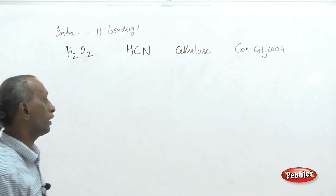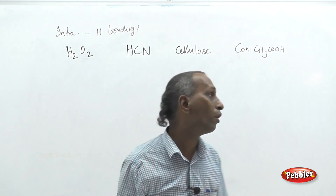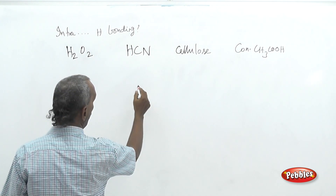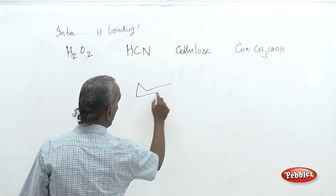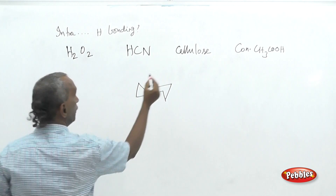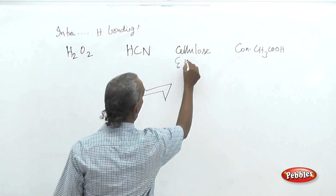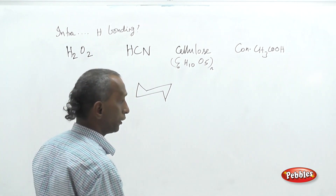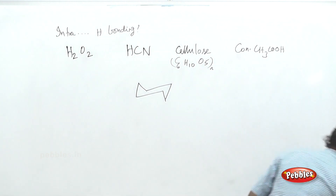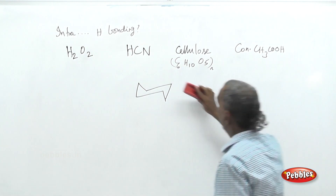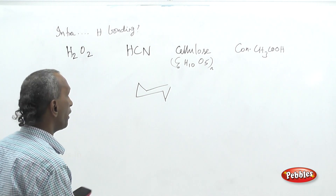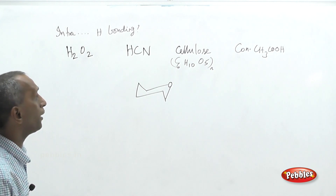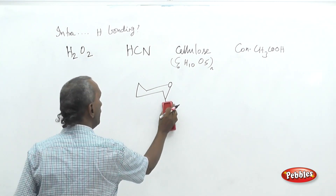Coming to cellulose: cellulose is made up of linkages called glycosidic linkages and is written as a ring structure. Its formula is (C₆H₁₀O₅)ₙ, made up of many glucose units. Cellulose is made up of glucose units connected by glycosidic linkages. In the glucose units arranged as ring structures, out of five oxygen atoms, one is in the ring and others are in the side chain.